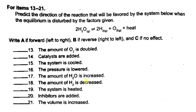Number 18: the amount of H₂O is decreased. The stress is decreasing the amount of H₂O. To balance this, the system will shift to the right to make more H₂O. So this favors the forward reaction.